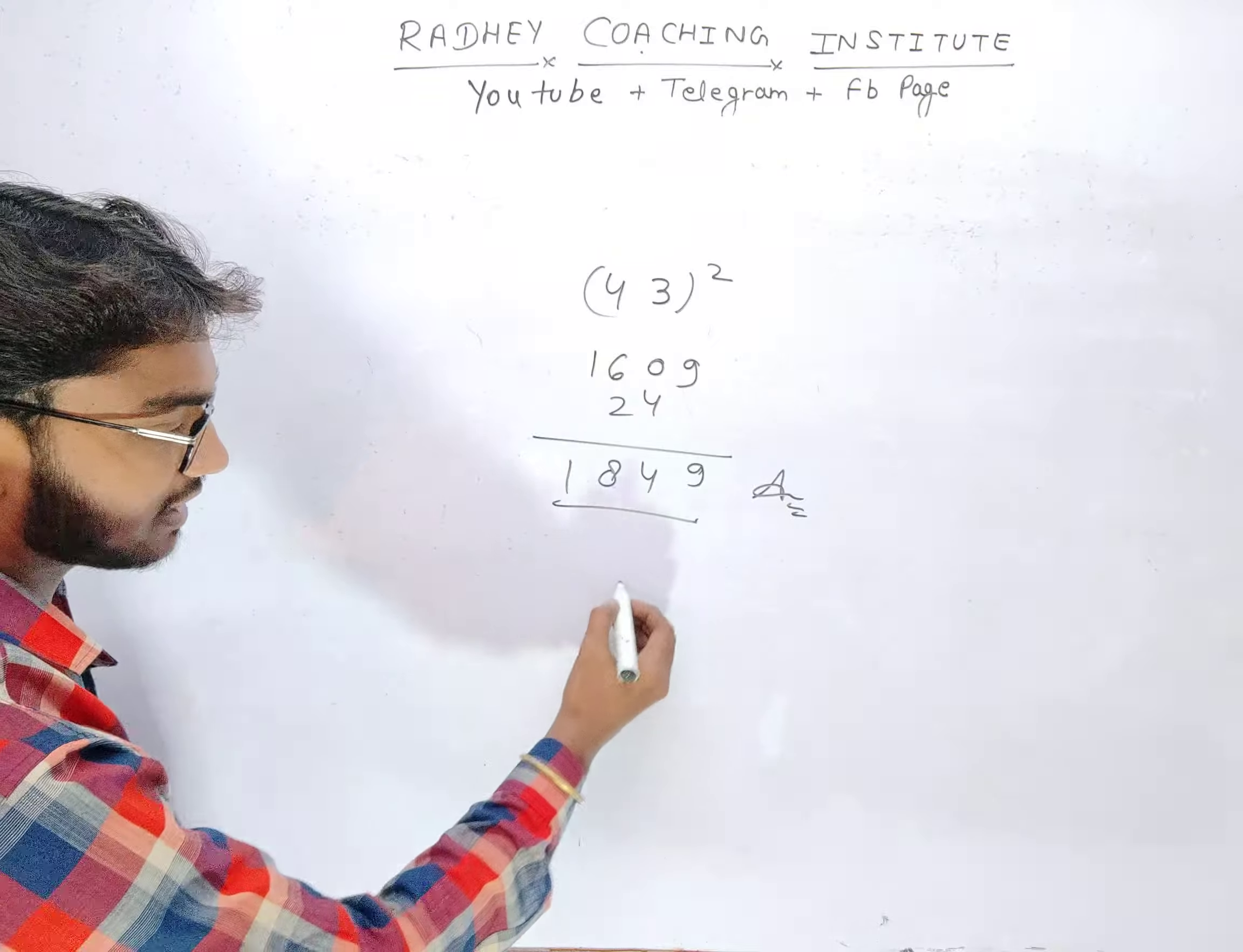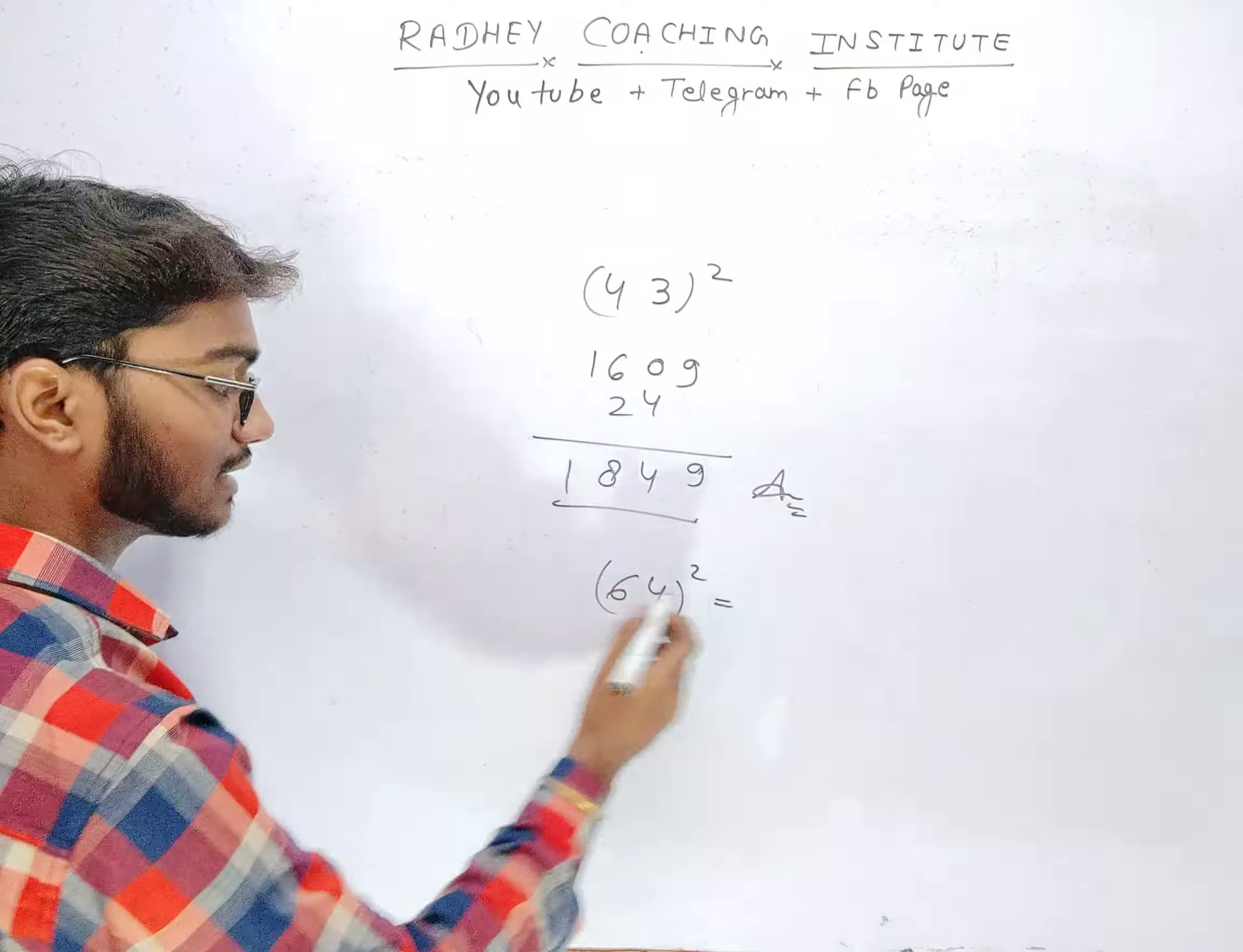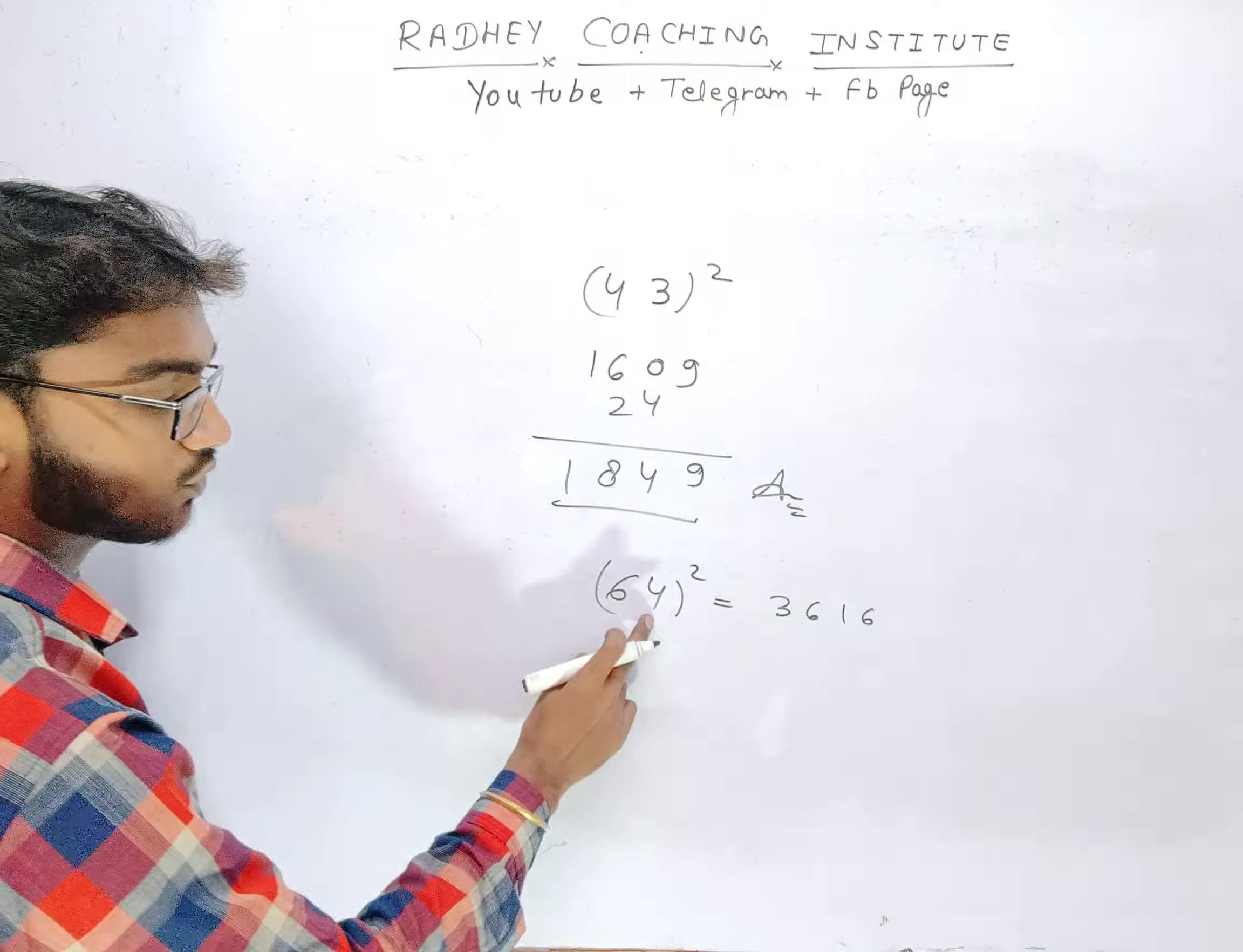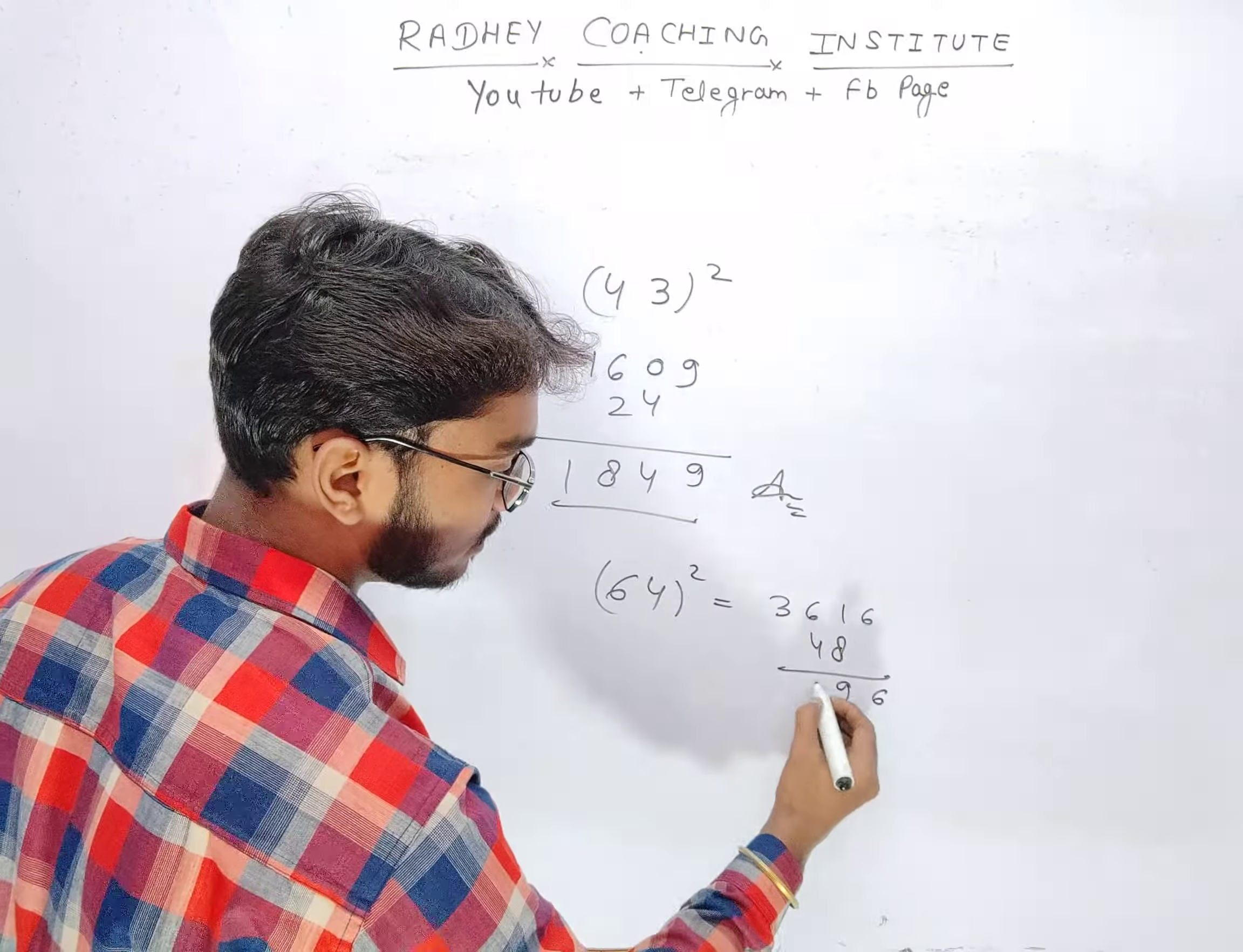Now you can check. Let's see, we have to take 64. 64 squared is here. So how much is it? 36. 16. 6, 4 is 24, 2, 48. Okay, 6, 9, 0, and 4.